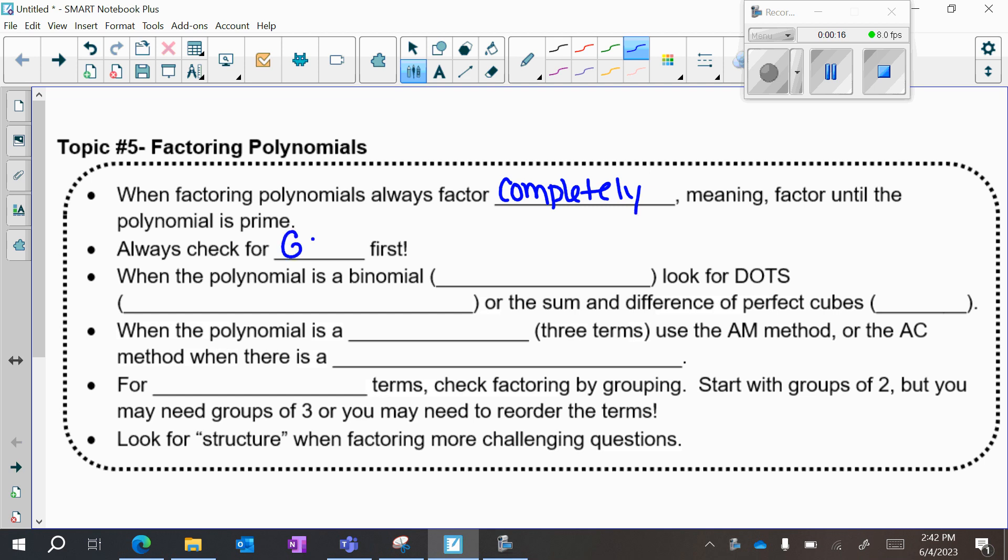You always want to check for GCF first, or the greatest common factor. When the polynomial is a binomial, which means it has two terms, look for DOTS.